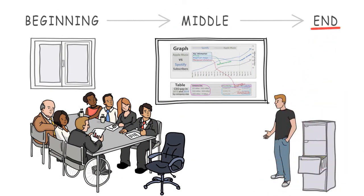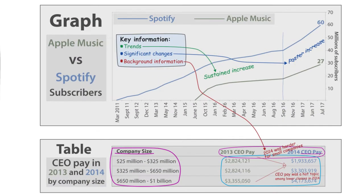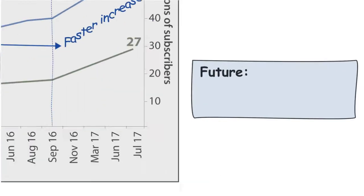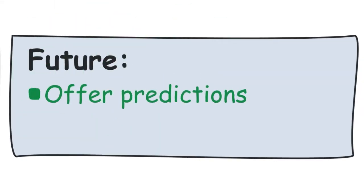Now that you've helped your audience understand what they're looking at and explained the key information of the graph or table, it's time to wrap up your presentation. There are two common ways to do this, and they both involve talking about the future. Number one: offer predictions. This works well if your presentation is about market conditions. Where do you see the market going? Try to keep the predictions general instead of too specific, as you don't want to be blamed if things don't go the way you said they would.